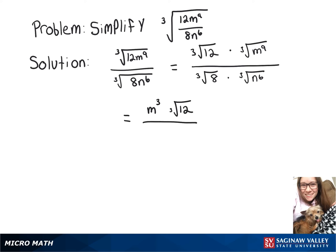And then on the bottom, the cube root of 8 is 2, and then for our cube root of n to the 6th, again we're going to divide that exponent by 3, giving us n squared, so here is our simplified answer.